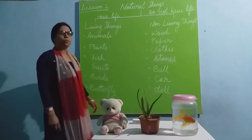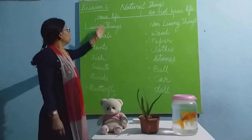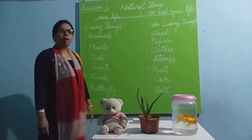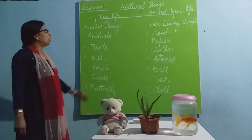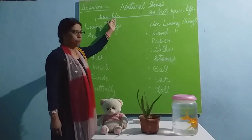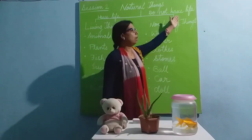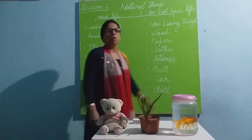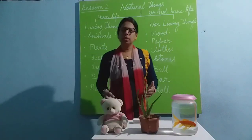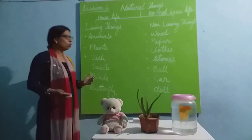Now we are going to proceed with session 2, where we will be discussing living things and non-living things. Living things are those things which have life in them, and non-living things are the things which do not have life in them. When we see around us, we see so many objects — some have life and some do not.